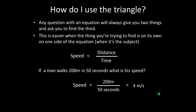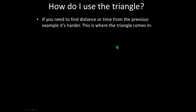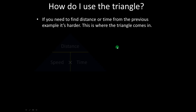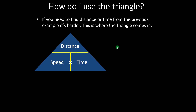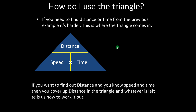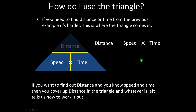The triangle comes in useful when you're not asked for speed, but for distance or time instead. You cover up the thing you're interested in finding. So if we're interested in finding distance, we grey it out and whatever is left gives you the equation. Speed multiplied by time is what's left, so distance equals speed times time. Cover up what you're interested in and the remaining things in the triangle give you the equation for that quantity.